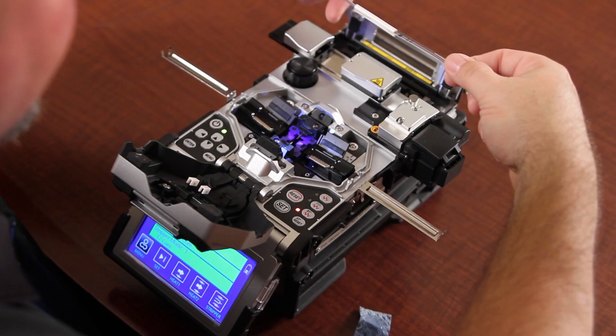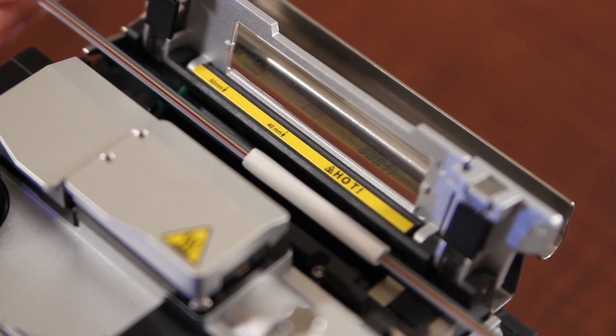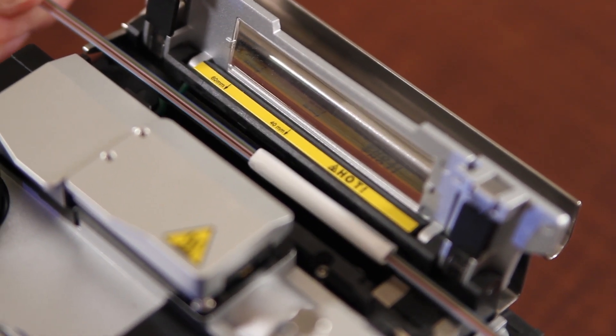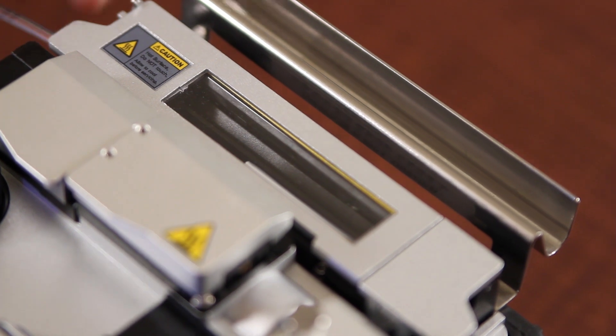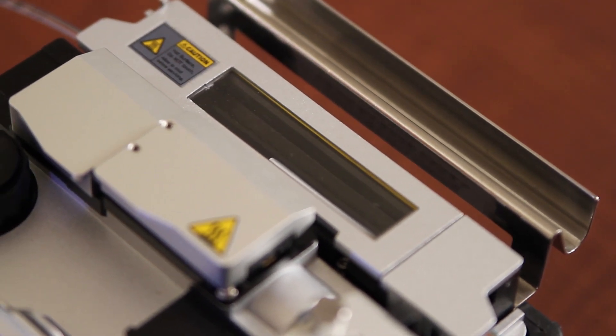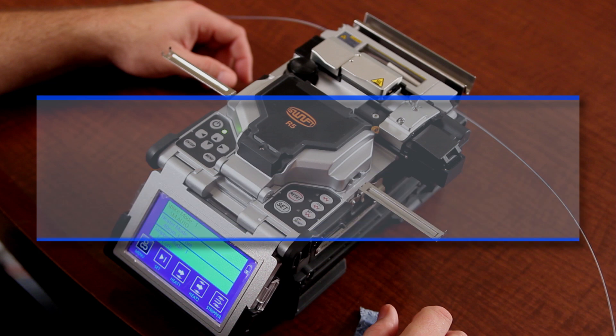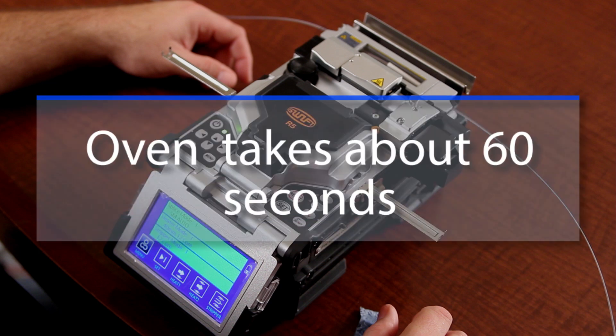Open your oven. Place your splice in, aligning to the appropriate heat shrink marking. Turn your oven. This takes approximately 60 seconds.